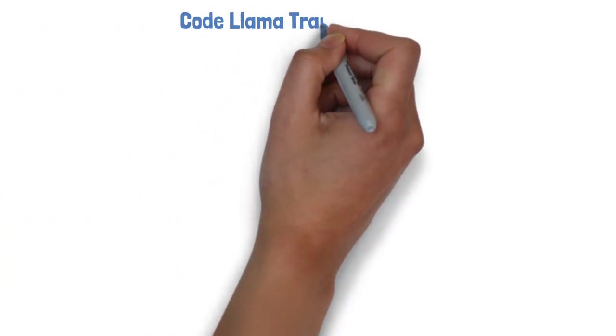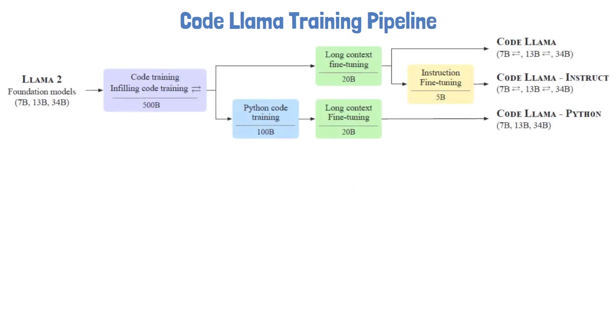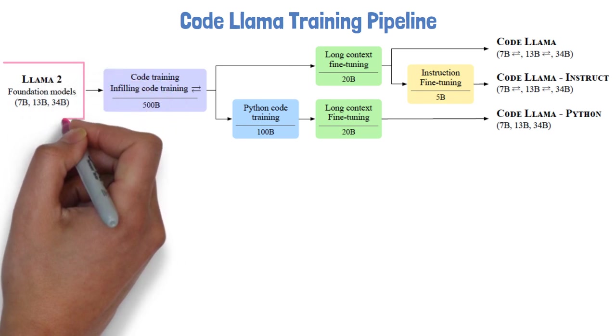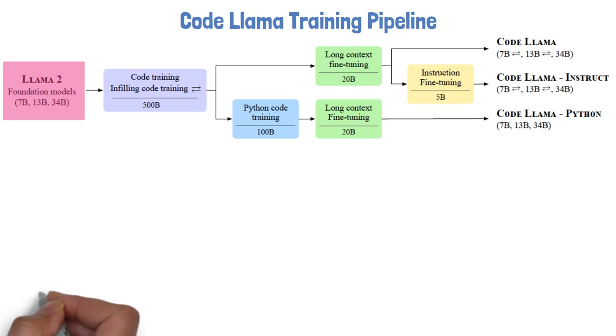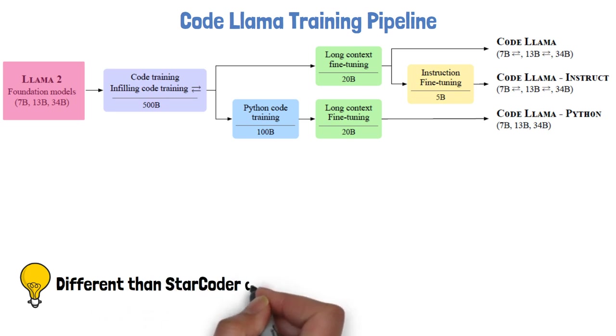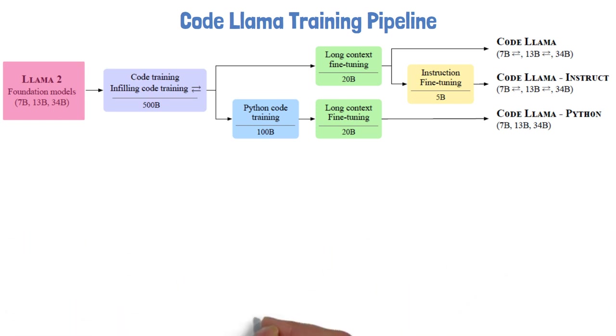Let's start with a high-level view about the CodeLama training pipeline with the following picture from the paper, and later dive into some of the steps. We start with the Llama 2 model with 7 billion, 13 billion, or 34 billion parameters. This is different than other successful open-source code LLMs such as StarCoder, which are trained on code only. Here we start with Llama 2, which was trained on general-purpose text and code data.